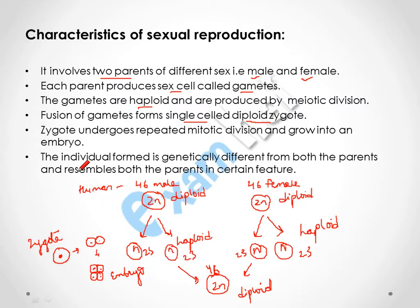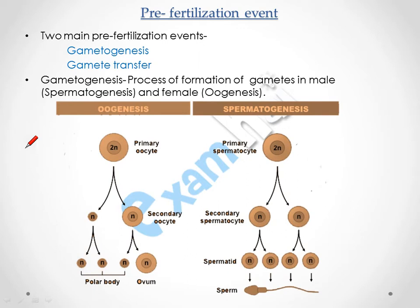The individual formed is genetically different from both parents but resembles both in certain features, as it contains half the number of chromosomes from the male and half from the female. The two main pre-fertilization events are gametogenesis and gamete transfer.